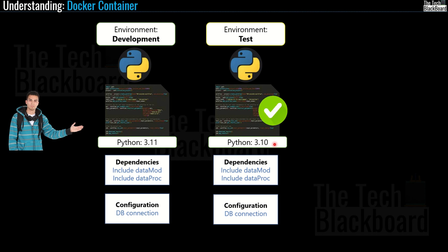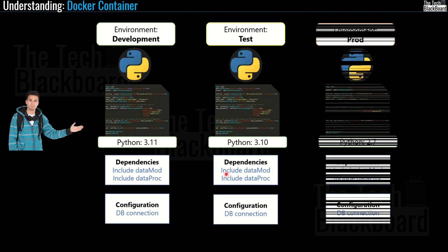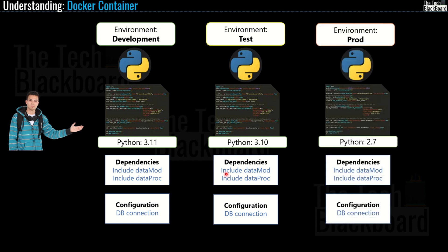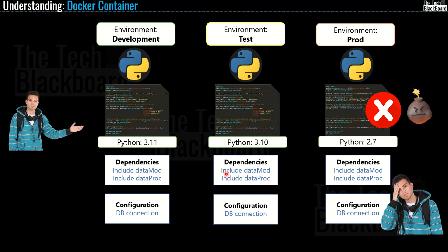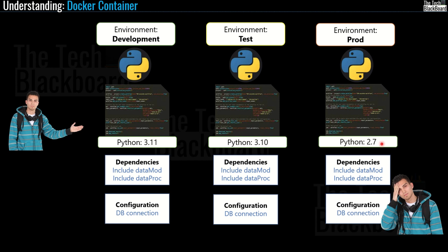Dataproof app is once again working as expected and the testing team did some rigorous testing. And now comes the final day — the day when the code meets the production environment. The code is deployed in production and the hell broke. The entire application fell flat, nothing is working, customers are mad, and Mr. Joy is not in joy anymore. To his utter surprise, he finds that the production environment is still running on Python version 2.7, and his code is nowhere close to being compatible with this obsolete version.